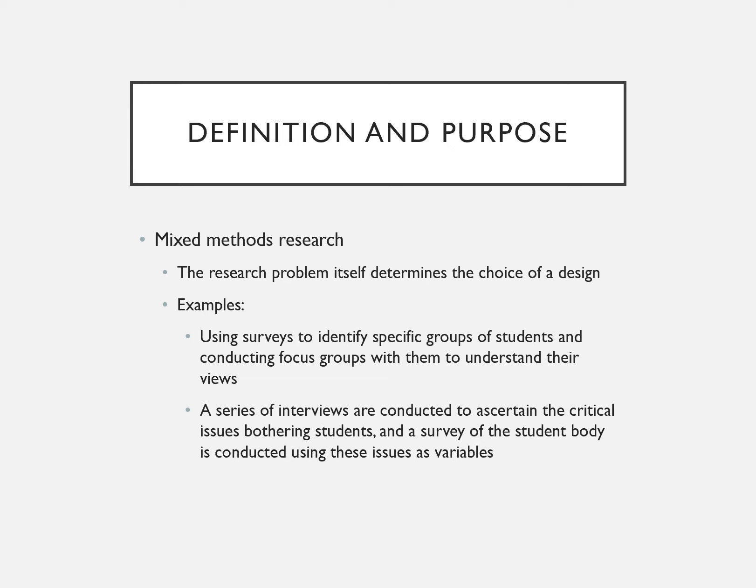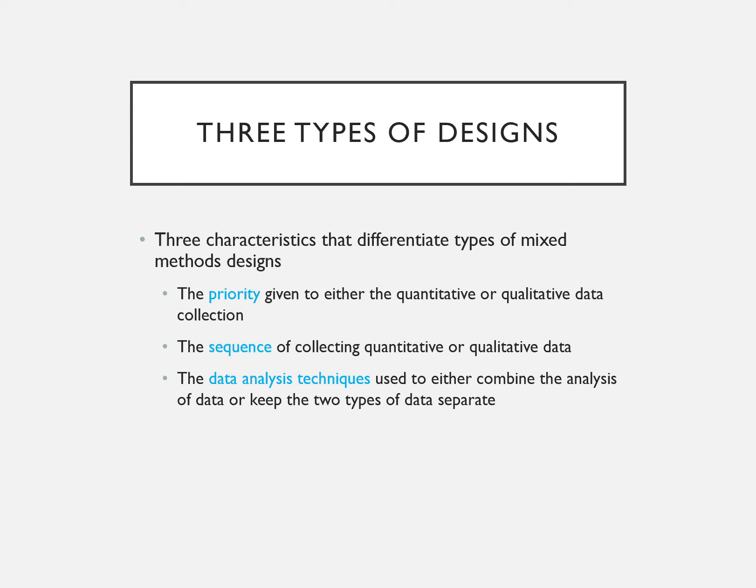The research problem itself determines the choice of design. For example, you might use surveys to identify specific groups of students and then conduct focus groups with them to understand their views. Alternatively, a series of interviews can be conducted to identify critical issues, and then a survey of the student body is conducted using those issues as variables.